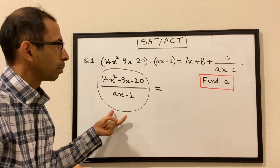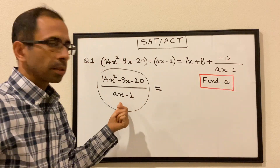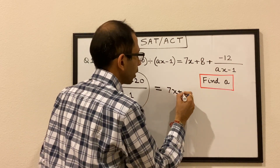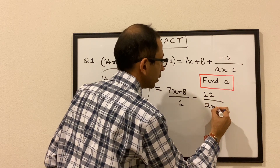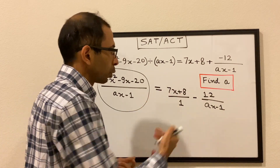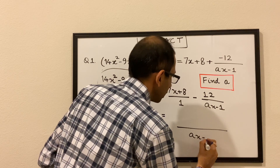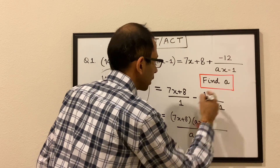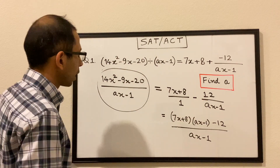On the right side we do not have a single fraction, however one of the denominators is the same — ax minus 1. So we can consolidate the right side: plus minus becomes minus, so minus 12 over ax minus 1. Now 7x plus 8 is the same as 7x plus 8 divided by 1. We make the same denominator ax minus 1, multiply 7x plus 8 by ax minus 1, then minus 12.